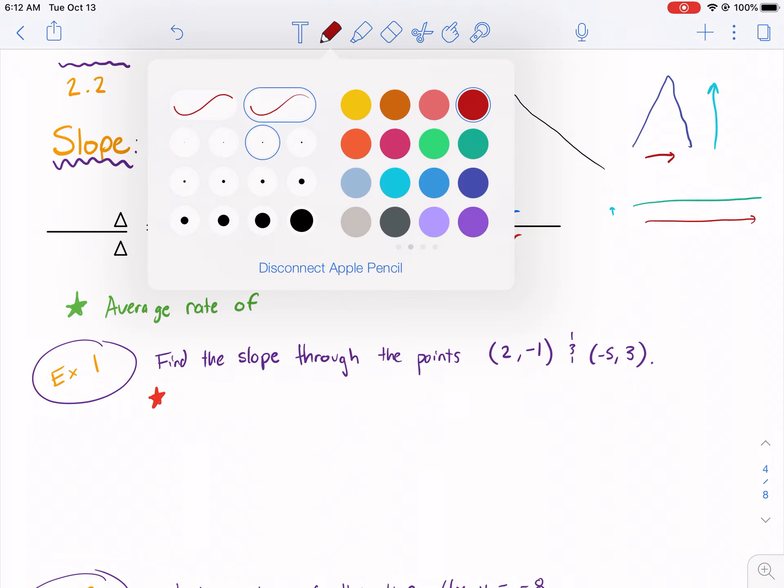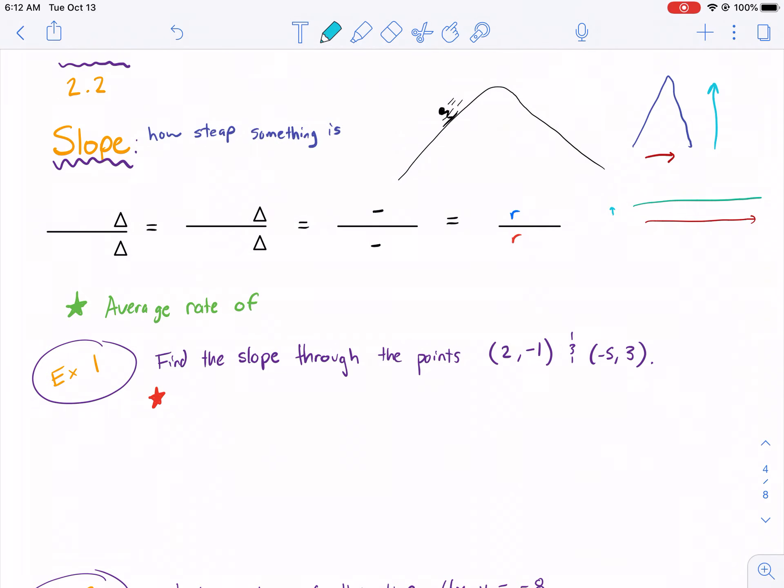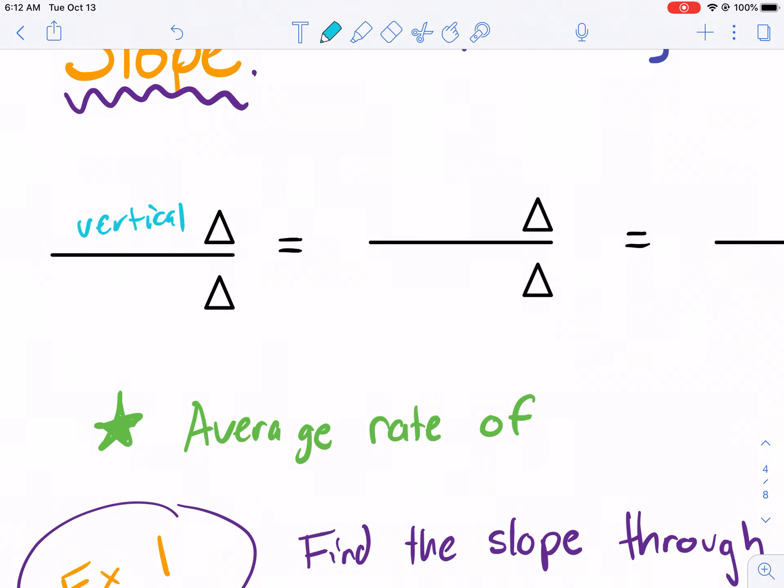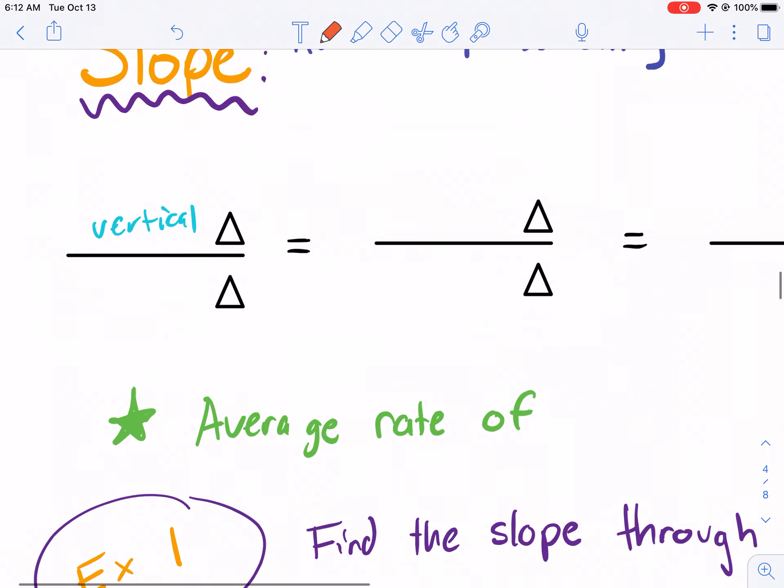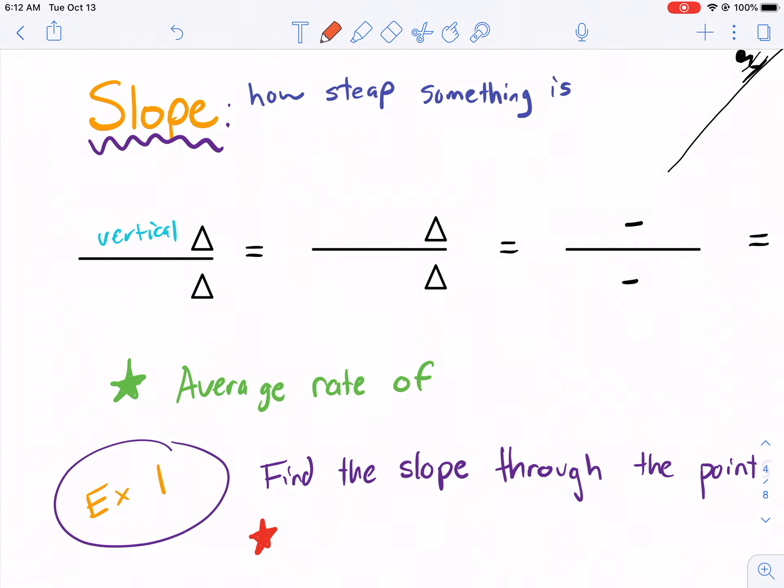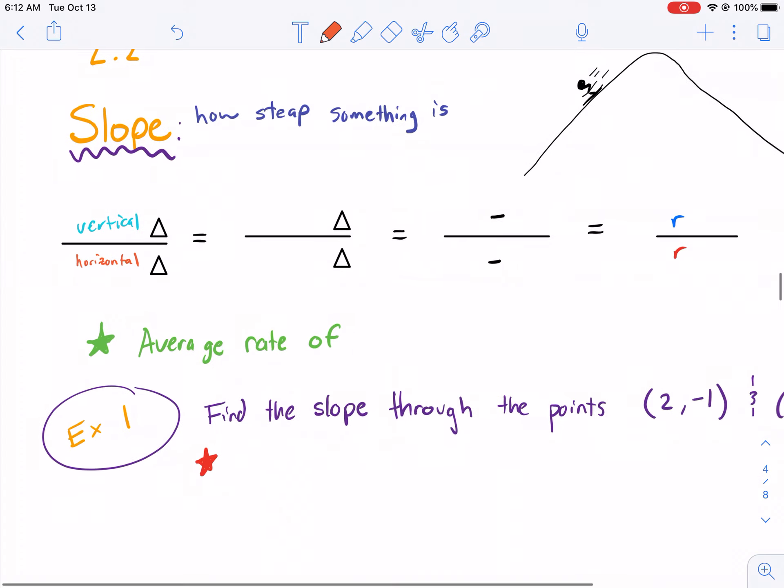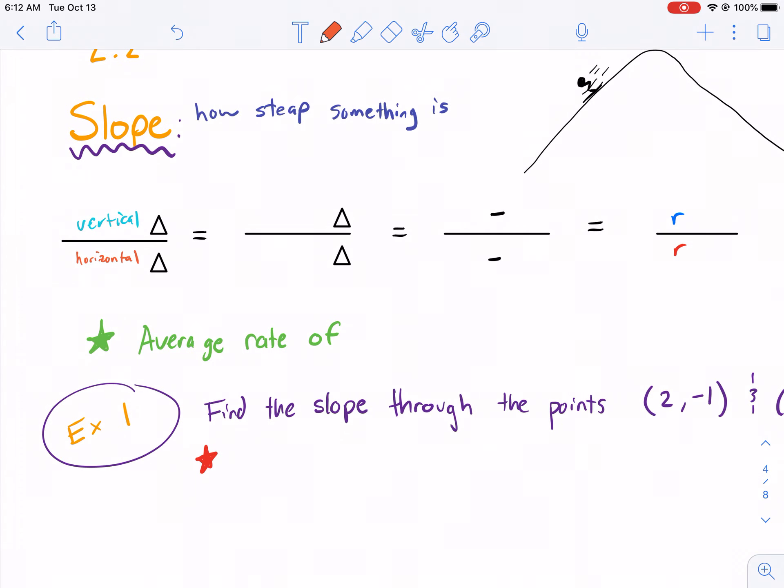How do we express this? Well, we can say that slope is our vertical change. And what does this triangle mean? This triangle means change. It's delta. Delta is the Greek letter for change. So vertical change over horizontal change. So the change vertically divided by the horizontal change will tell you how steep it is.